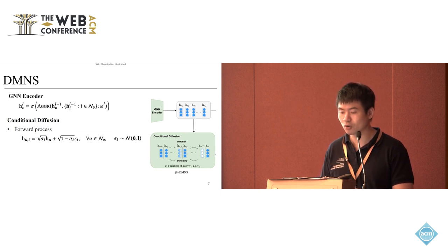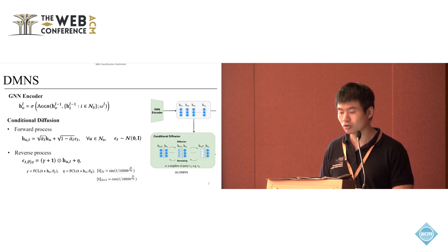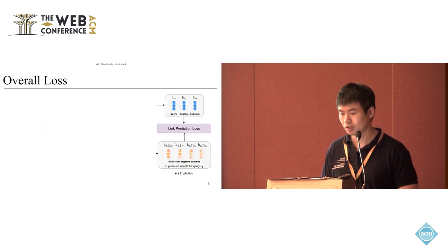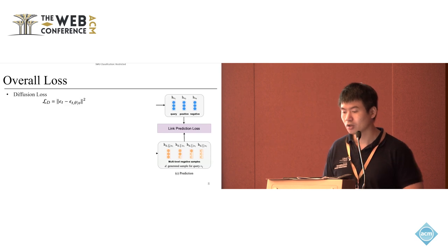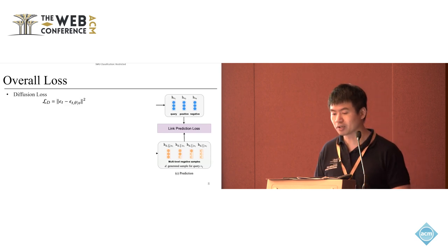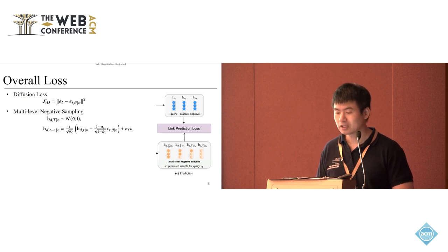The conditional diffusion process is a standard process. It contains two processes: one is the forward process, where we gradually add noises to the node embeddings, and the backward or so-called reverse process, where we try to do the de-noising—we try to predict the noises and remove the noises in each step. This is the diffusion loss, where we try to predict the noises.